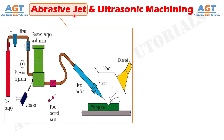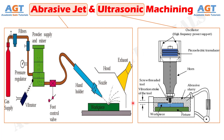In abrasive jet machining, hard abrasive particles are mixed with highly pressurized gas at a predefined mixing ratio, and the mixture is then allowed to come out via a nozzle in the form of a narrow jet. On the other hand, in ultrasonic machining, an abrasive slurry — abrasive particles suspended in a liquid medium — is delivered in the small gap between a vibratory tool and the workpiece.